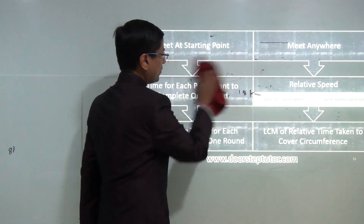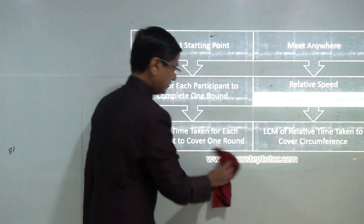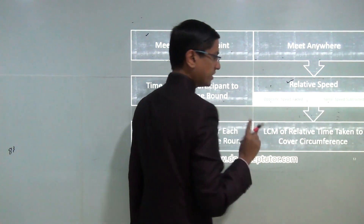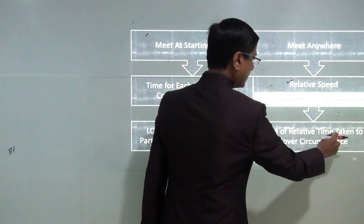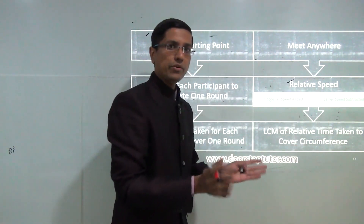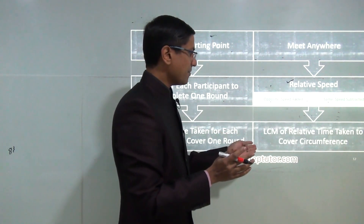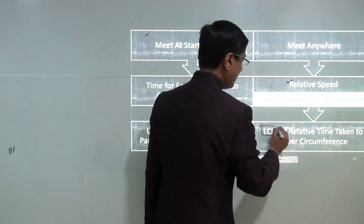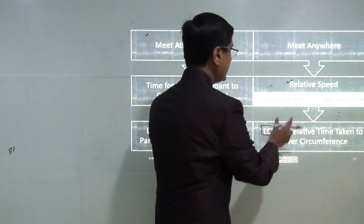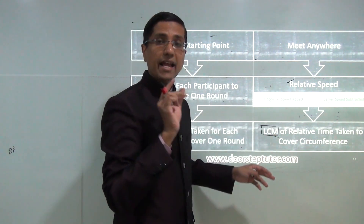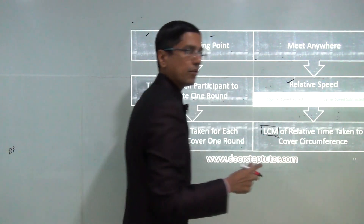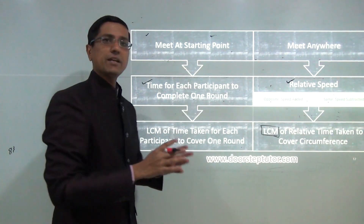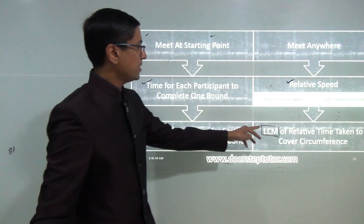Summary so far: to find the time for meeting anywhere on the track, use the relative velocity. For two racers, compute relative velocity and then find the meeting time. For more than two racers, take the LCM of their pairwise meeting times to find when they all meet together at any point on the circle. To find when they meet at the starting point, calculate the time each one takes to complete a lap and take the LCM.